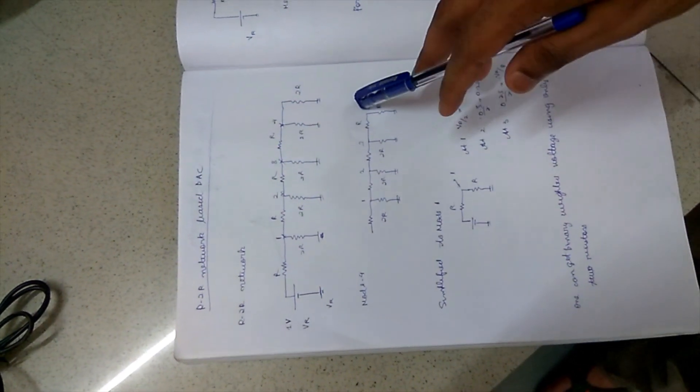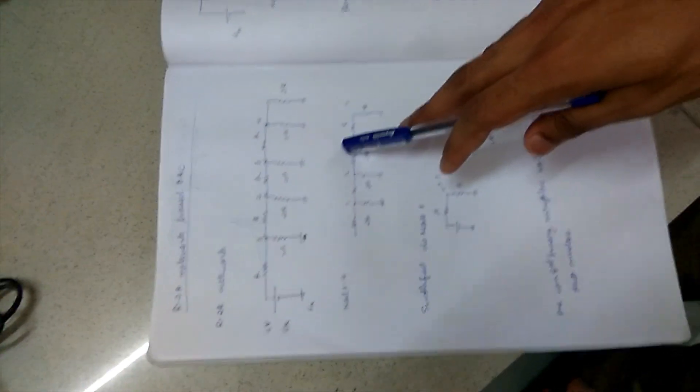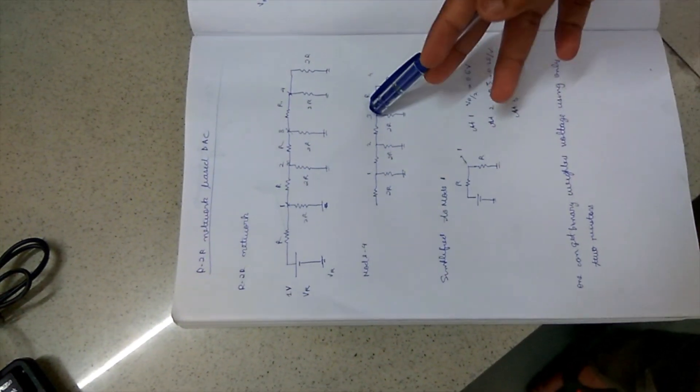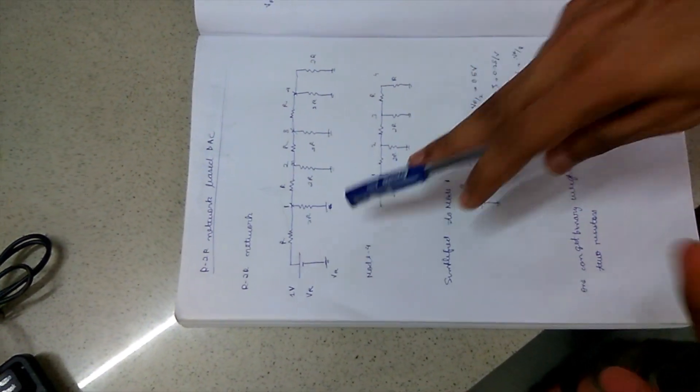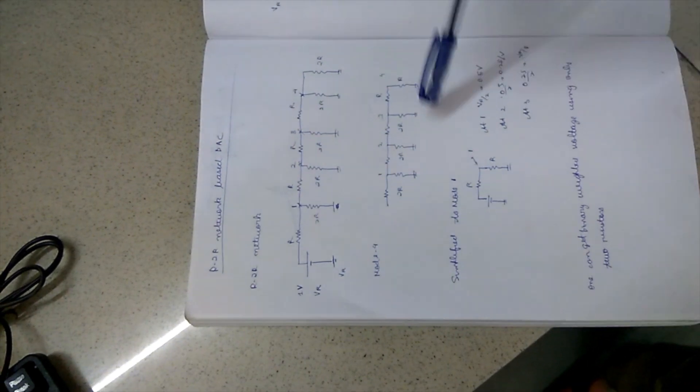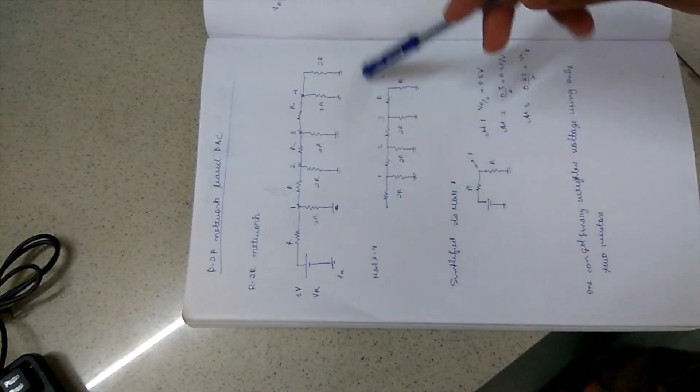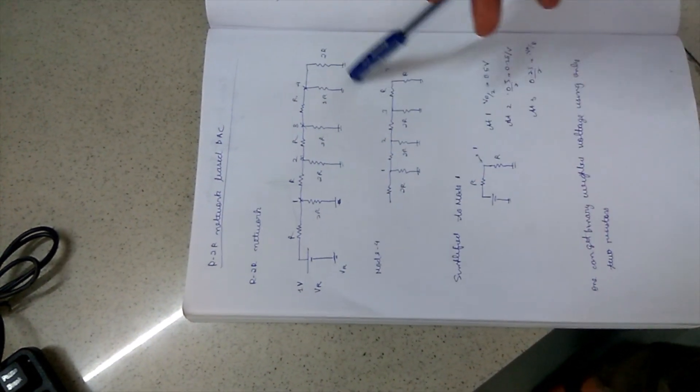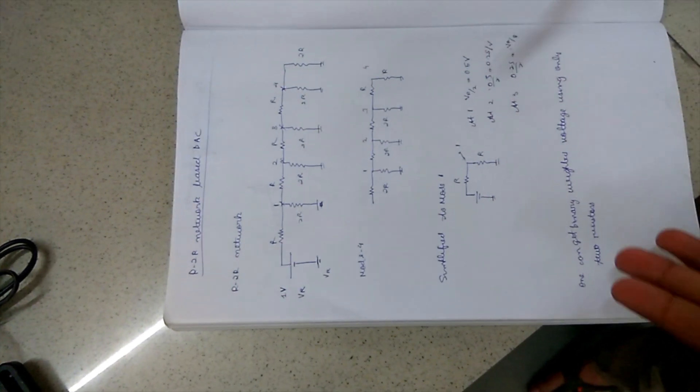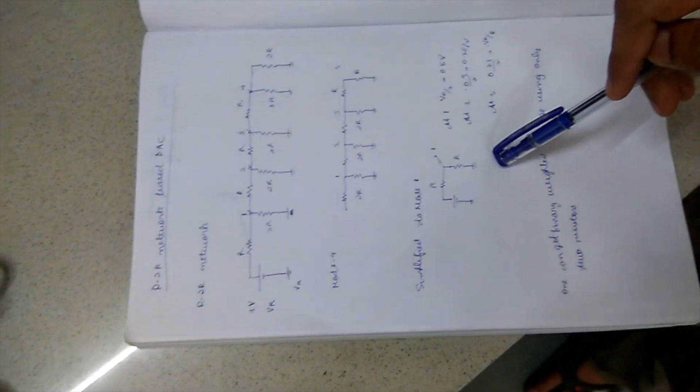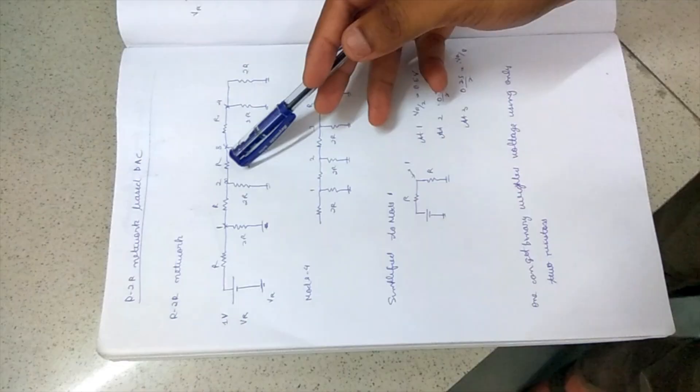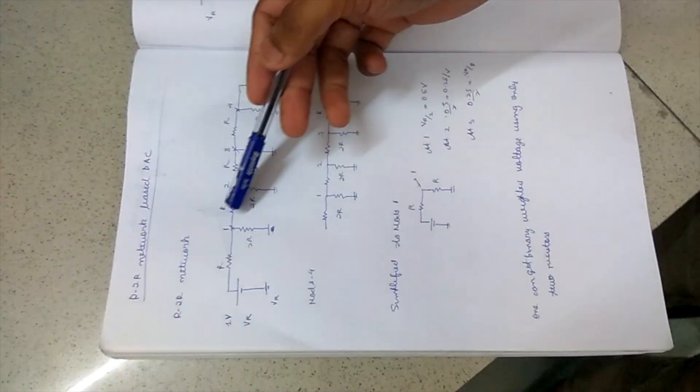In this case, this is similar to the previous method. But here, we use only two resistances, R and 2R. If we try to simplify the circuit, we are able to find out the Vr at different nodes: 1, 2, 3, 4.